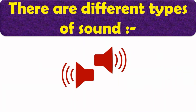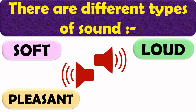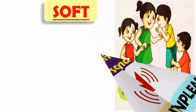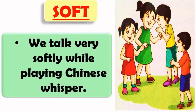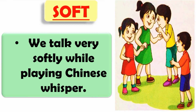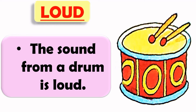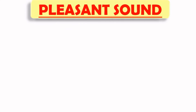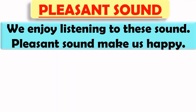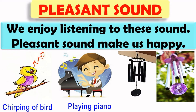There are different types of sounds: soft sound, loud sound, pleasant sound and unpleasant sound. We talk very softly while playing Chinese whisper — that is a soft sound. The sound from a drum is very loud. We enjoy listening to pleasant sounds like chirping of birds, sound of piano and sound of wind chimes. Pleasant sounds make us happy.